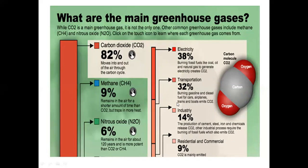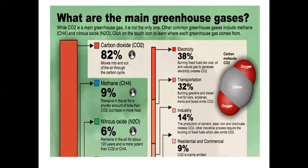Different issues contribute: electricity generation, transportation — when we burn petrol and diesel for cars, aeroplanes, trains, etc. — they also emit carbon dioxide. Industries producing cement, steel, iron, chemicals, and other industrial processes require fossil fuels to be burnt, so they emit carbon dioxide again. Even from residential and commercial purposes, almost 9% carbon dioxide is emitted. So there are many sources from which carbon dioxide is the main issue being released into the atmosphere.